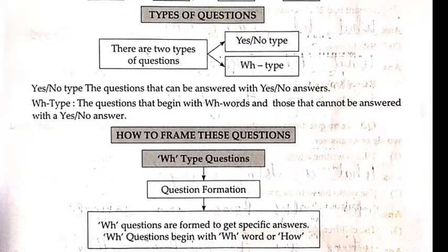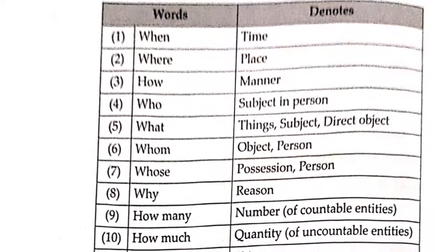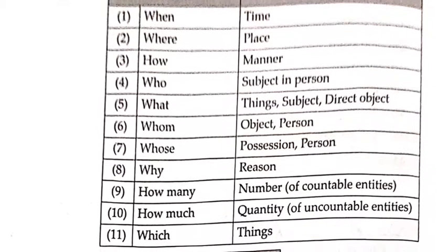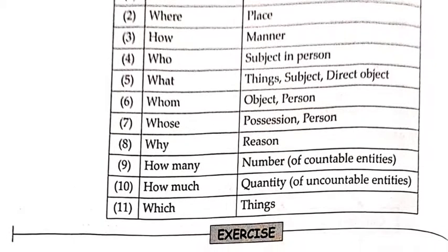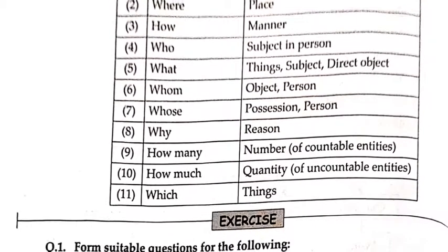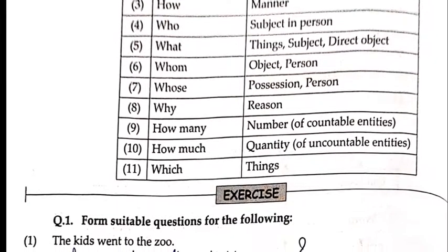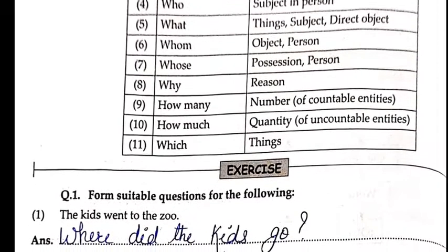How to frame these questions? WH type question — that is question formation. WH questions are formed to get specific answers and begin with a WH word or how. Words and what they denote: When denotes time. Where denotes place. How denotes manner. Who refers to subject in person. What is related to things — subject or direct object. Whom refers to object or person. Whose refers to possession or person. Why denotes reason. How many refers to number of countable entities. How much refers to quantity of uncountable entities. Which is related to things.